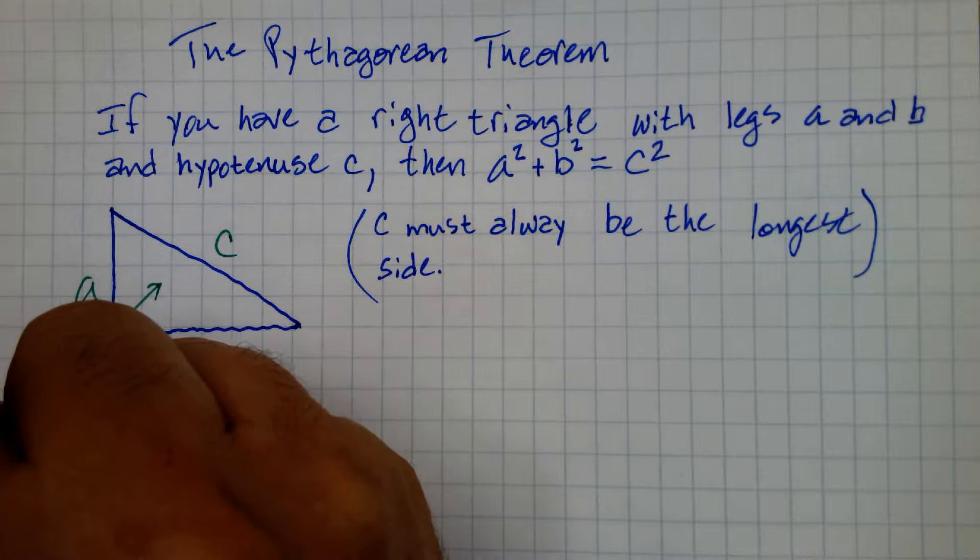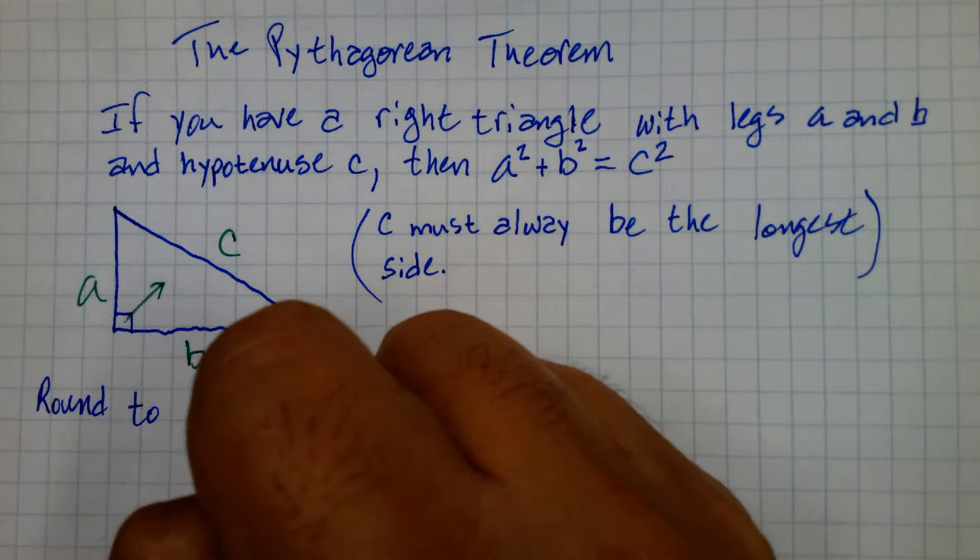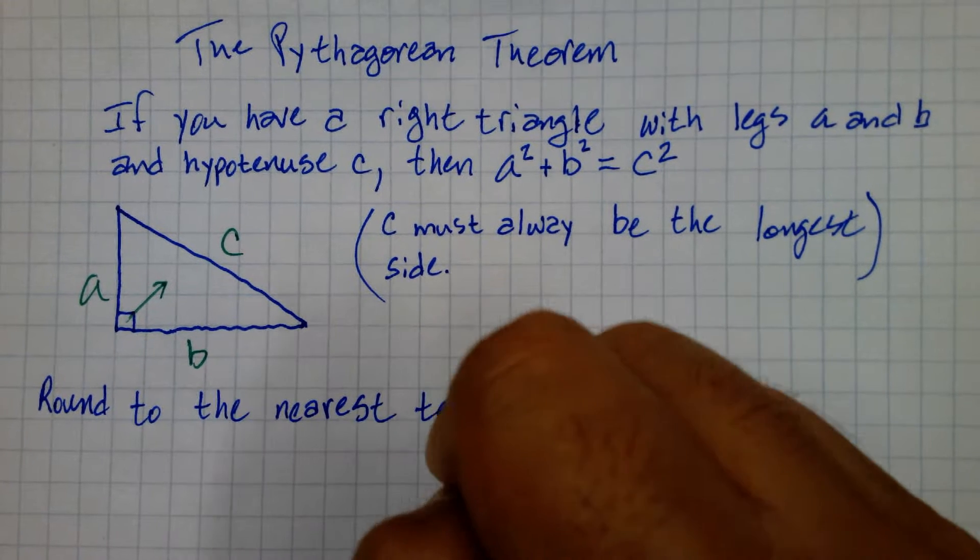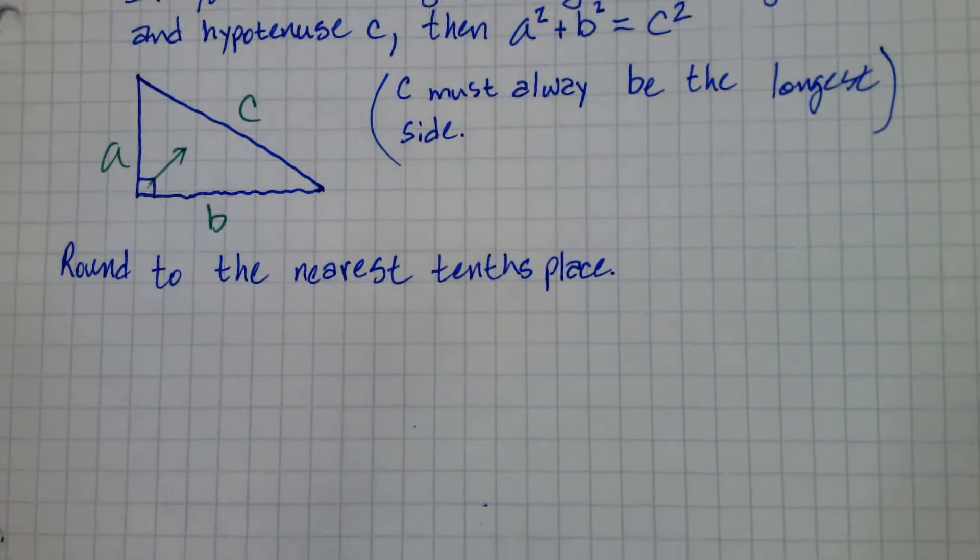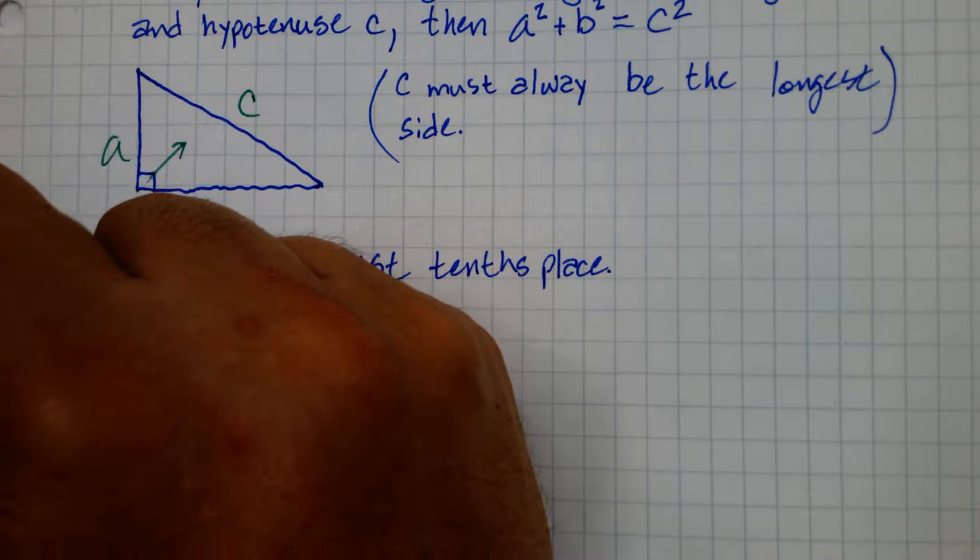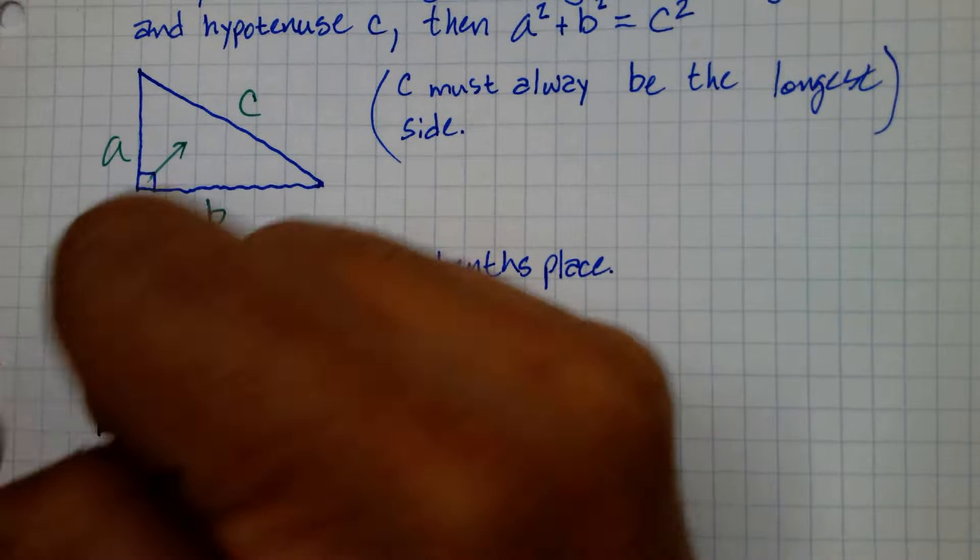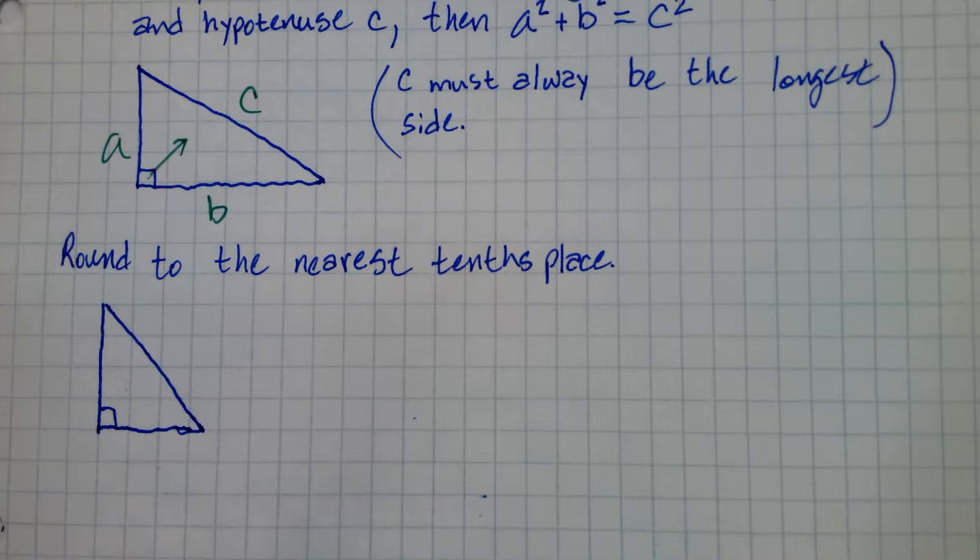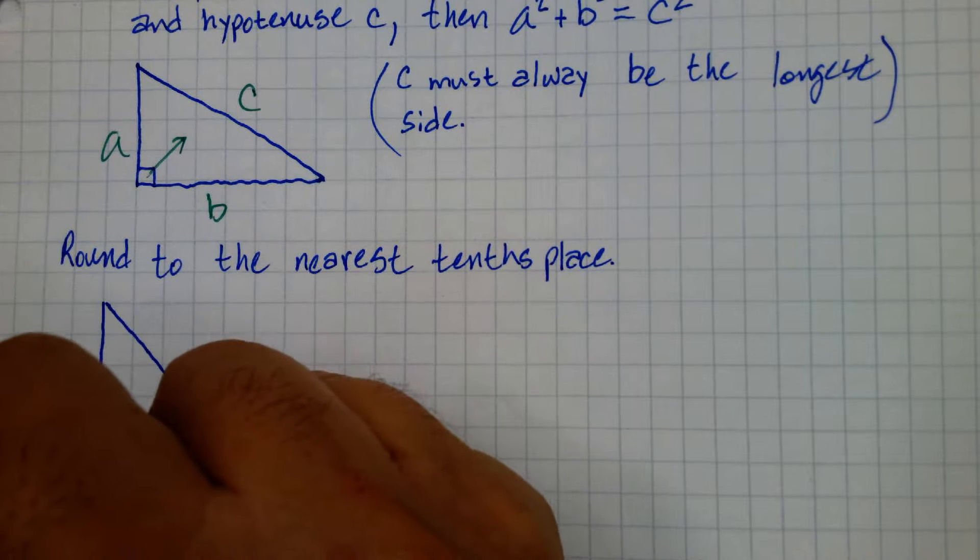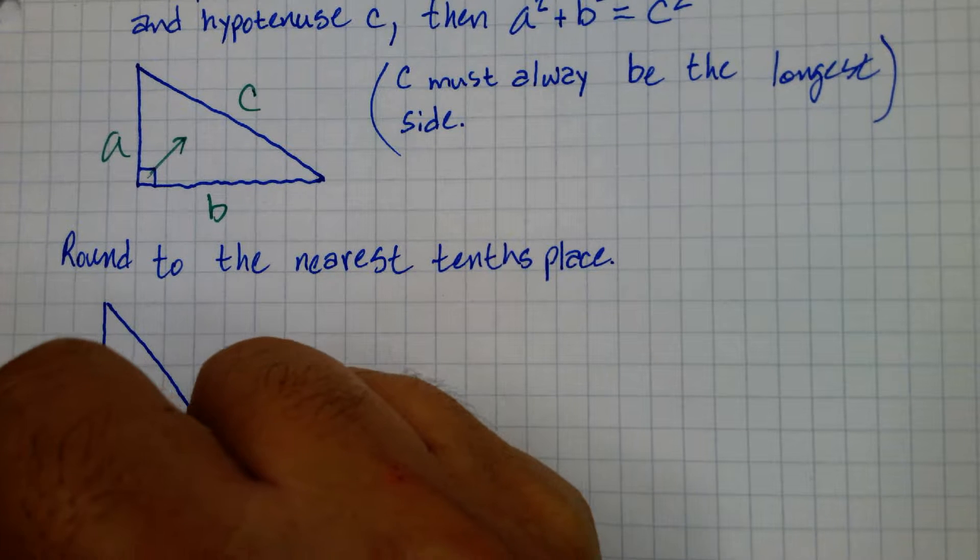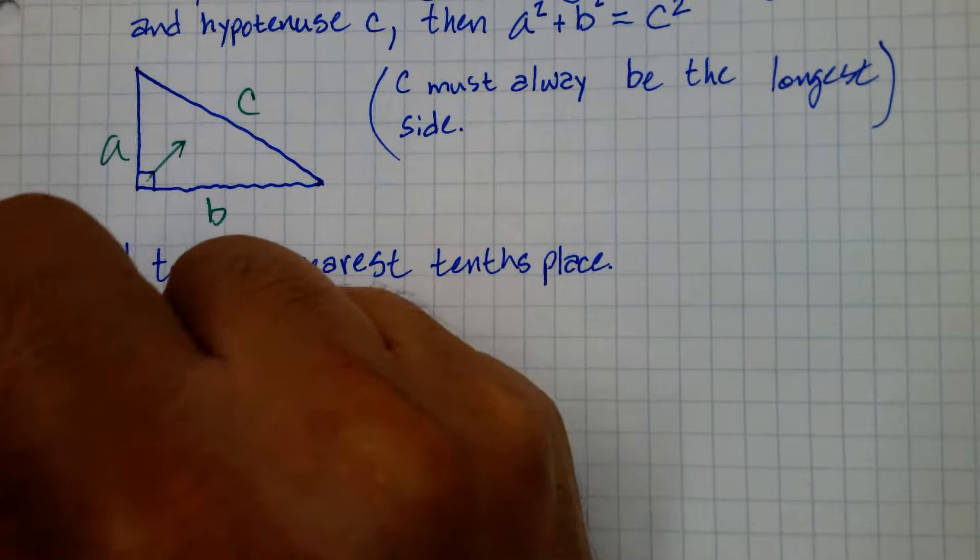So what we're going to do is we're going to round to the nearest tenth place. So one decimal place, basically. Let's get a right triangle going. And let's say this is 1.5 centimeters. And this is 2 centimeters. Let's find this side.